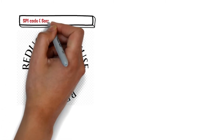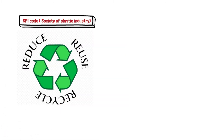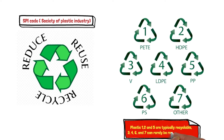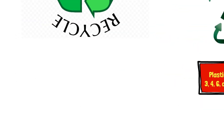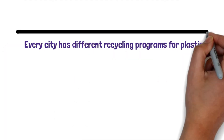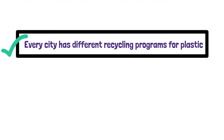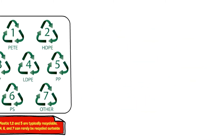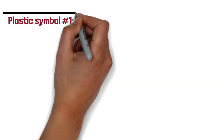This chasing arrow triangle is known as the SPI code — the Society of the Plastics Industry code. Plastics 1, 2, and 5 are typically recyclable, while 3, 4, 6, and 7 are rarely recycled. This varies because every city has a different recycling program for plastics. In this video we will discuss all seven types of recycling symbol and their related materials.